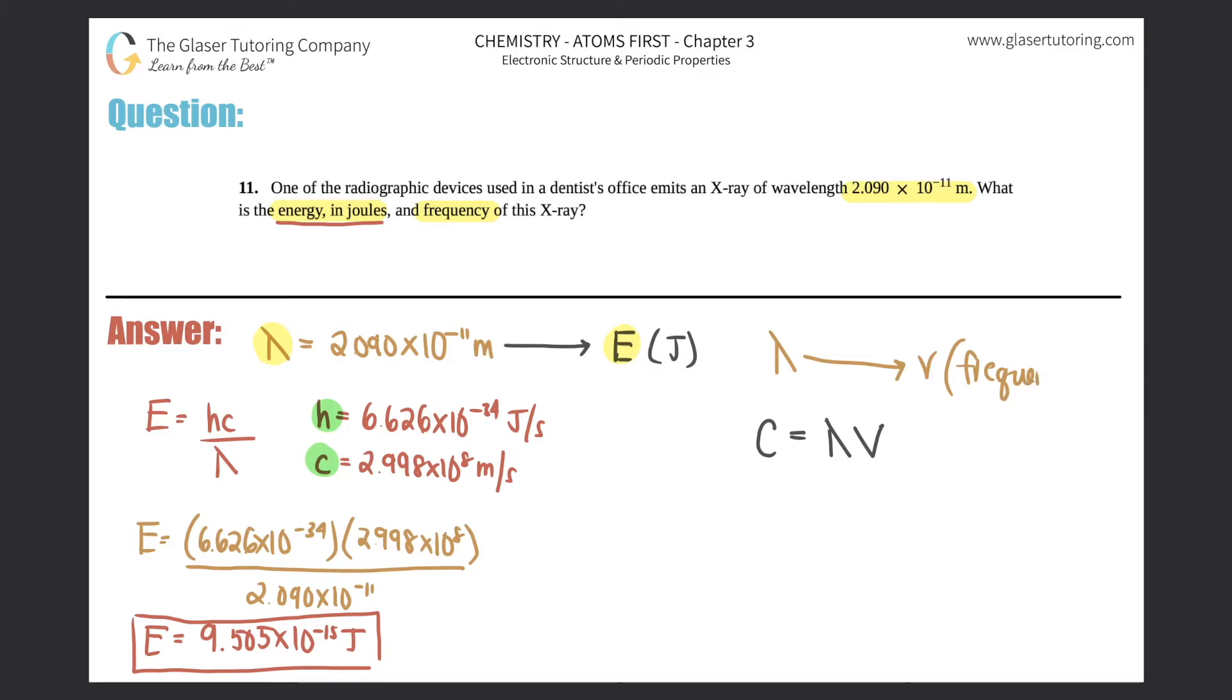We already know what the speed of light is: c equals 2.998 times 10 to the eighth meters per second. So just plug it in: 2.998 times 10 to the eighth equals the wavelength, 2.090 times 10 to the negative 11th times nu. Solve for frequency by dividing both sides by 2.09 times 10 to the negative 11th. That cancels out, and we get nu, which is frequency, equals 1.434 times 10 to the 19th cycles per second, or s to the minus one.